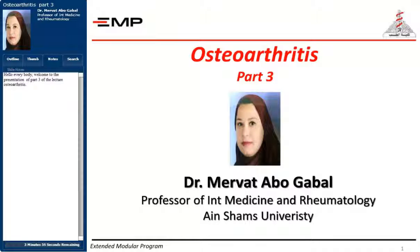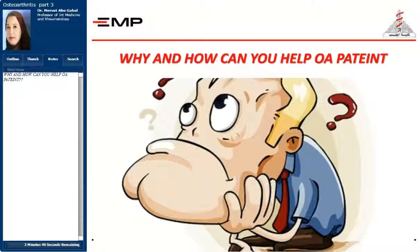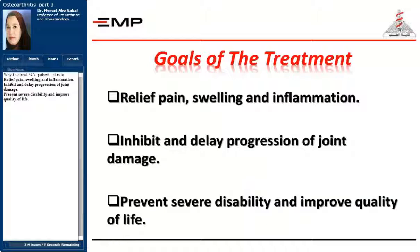Hello everybody, welcome to the presentation of part 3 of the lecture on Osteoarthritis: Why and how can you help osteoarthritis patients? Why to treat osteoarthritis patients is to relieve pain, swelling and inflammation, inhibit and delay progression of joint damage, prevent severe disability, and improve quality of life.